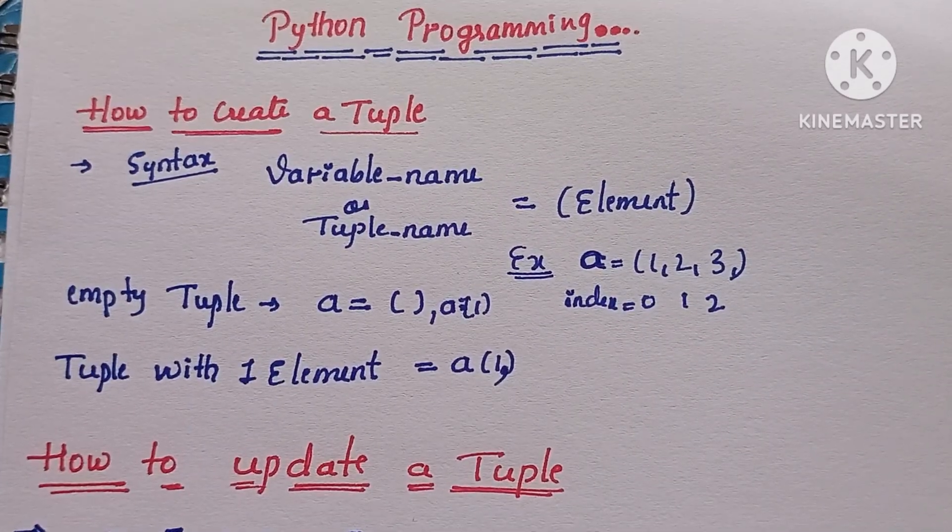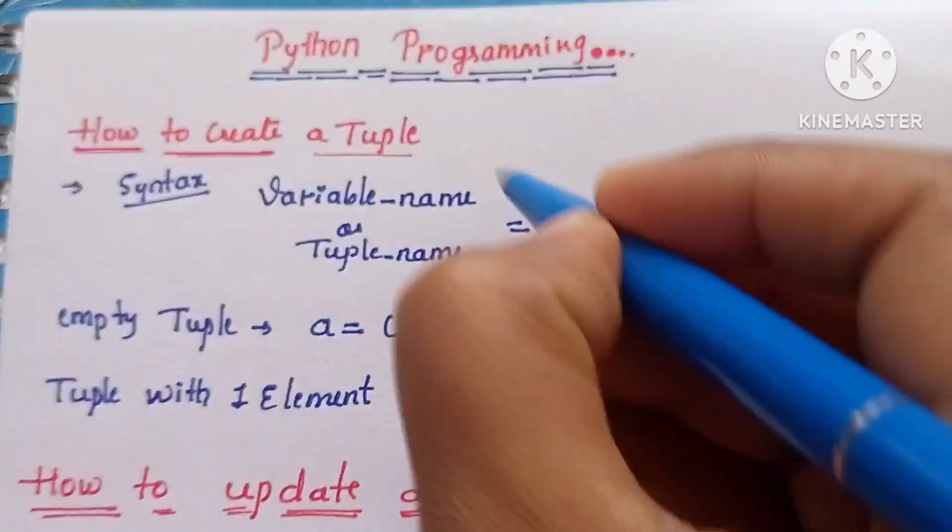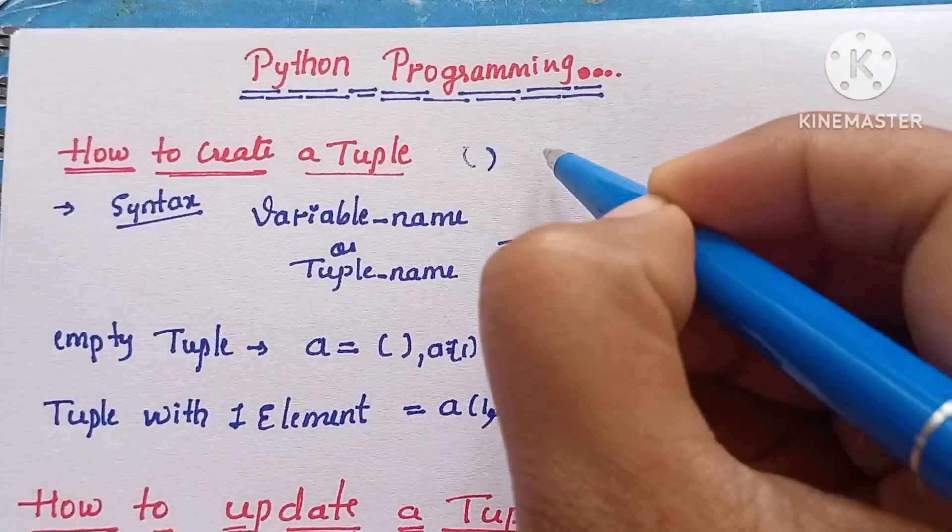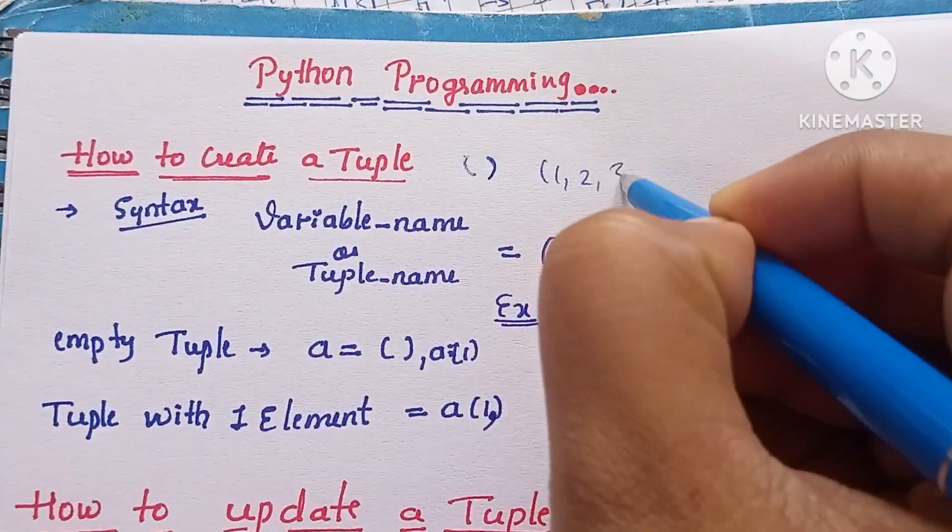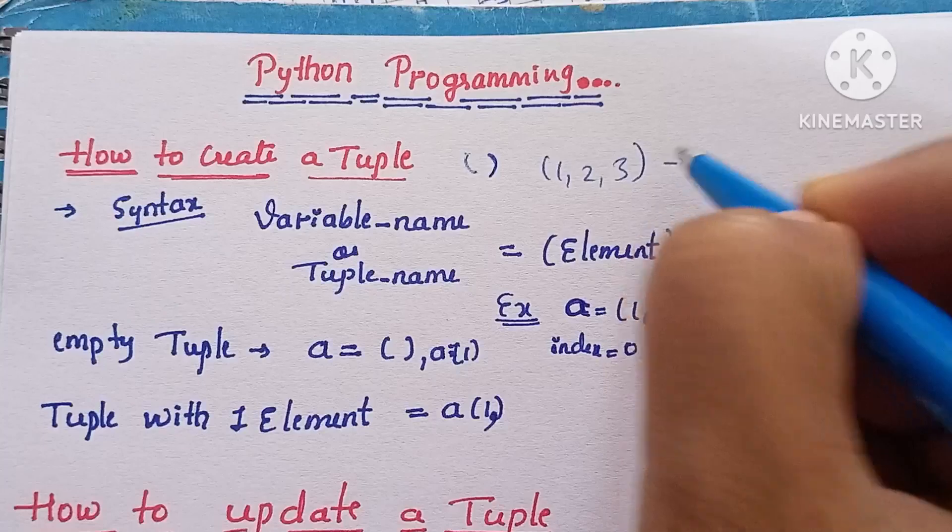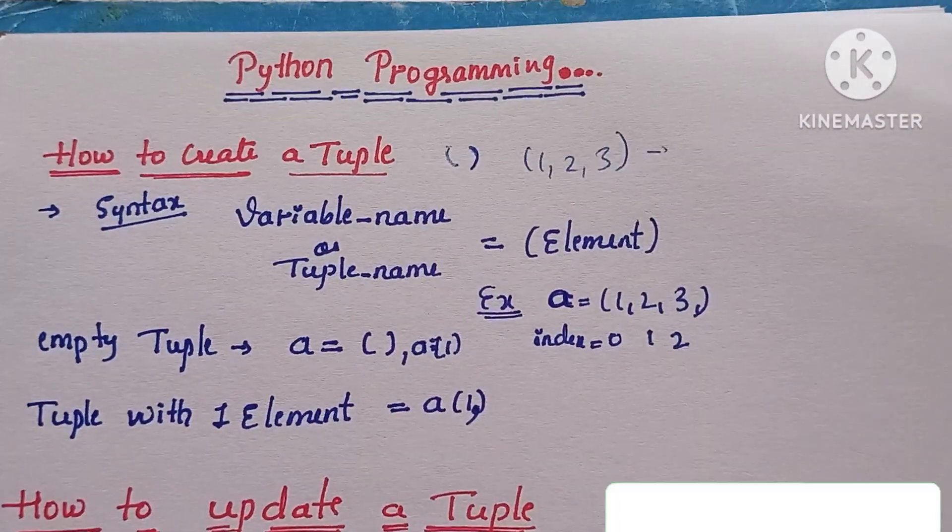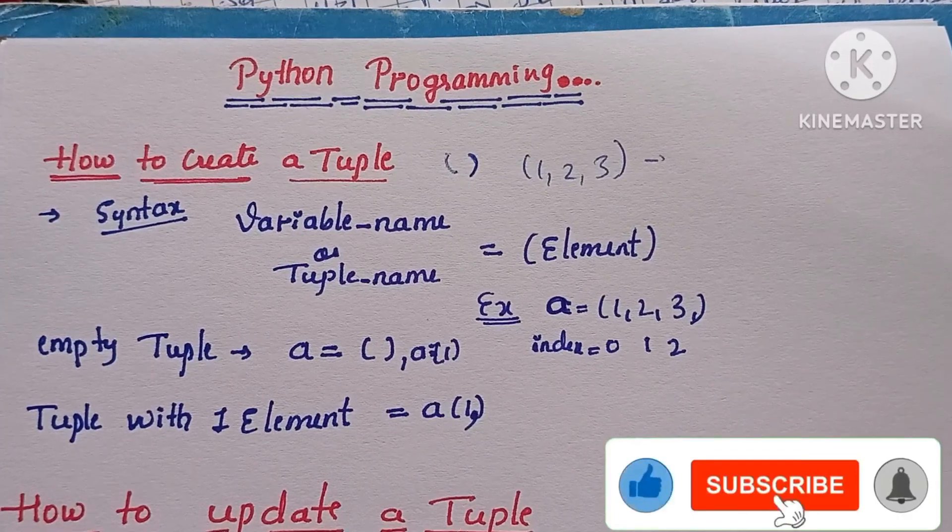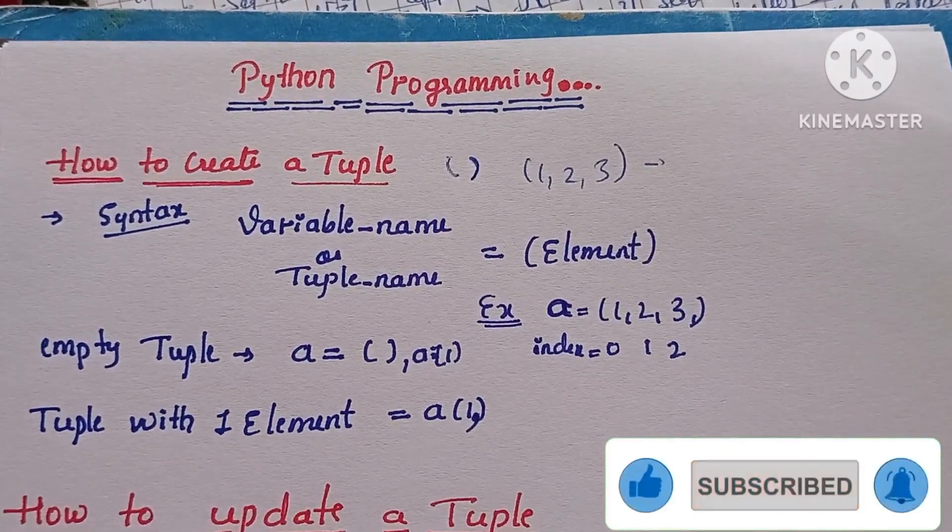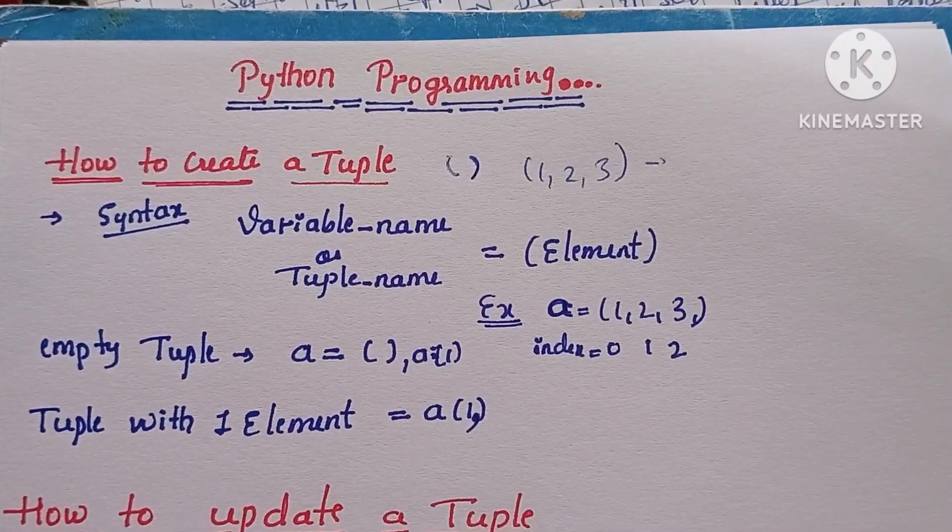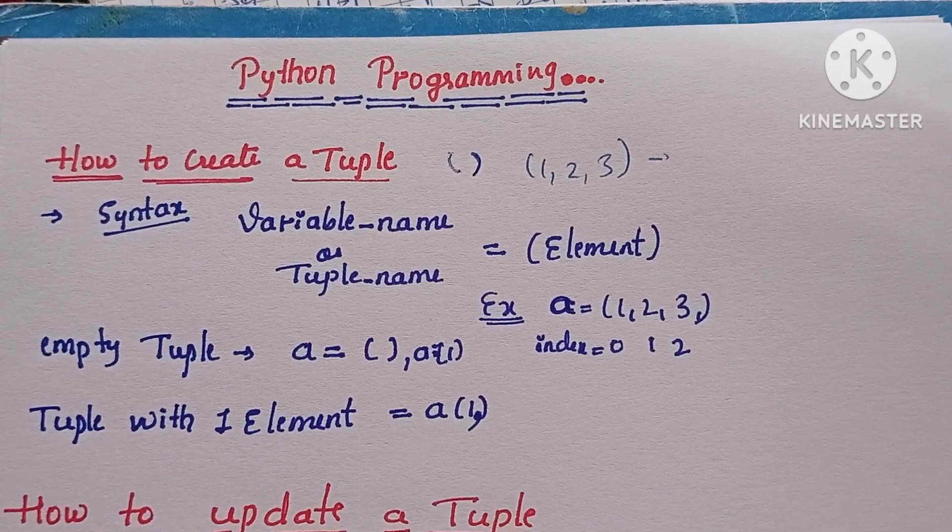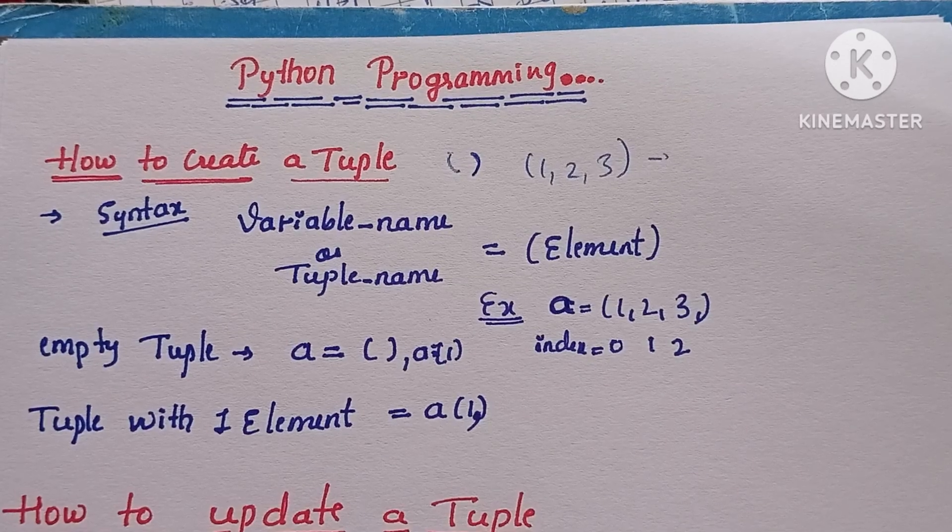Tuple can be represented in parentheses. For example, (1, 2, 3) - this is a tuple. Tuple is immutable, which means we cannot update the tuple. Instead of updating the tuple, we can assign these elements along with some more elements into another tuple. So that means the same tuple will not be changed.